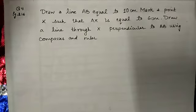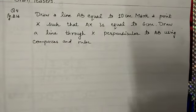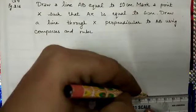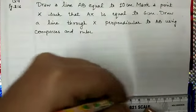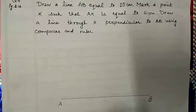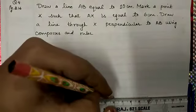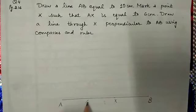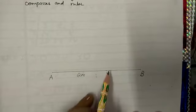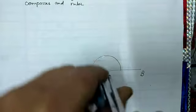Now question number 4 that I am going to discuss with you. Draw a line AB equal to 10 centimeters. First of all, we will draw a line of measure equal to 10 centimeters. Using our scale, first of all we will draw a line and name it as AB. Now we will mark a point X such that AX is equal to 6 centimeters like this. This is point X and this AX is equal to 6 centimeters.